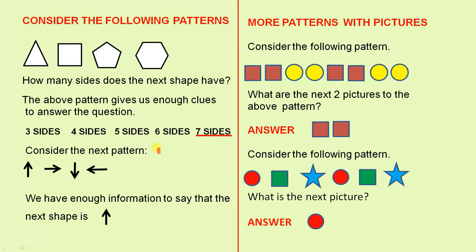Consider the next pattern. We have an arrow pointing up, pointing to the right, pointing down, pointing to the left. So if we follow those patterns there, we can easily see that the next arrow points up. So we have enough information to say that the next shape is this one.